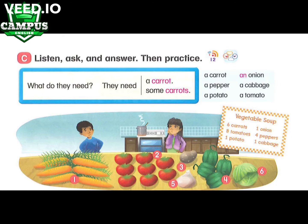Page 7, C. Listen, ask, and answer. Then practice. What do they need? They need some carrots. What do they need? They need some tomatoes.